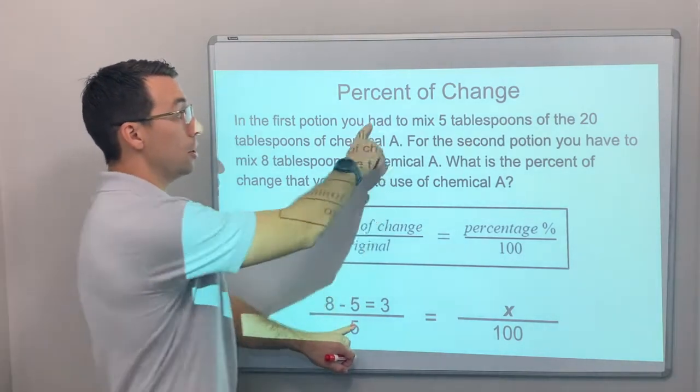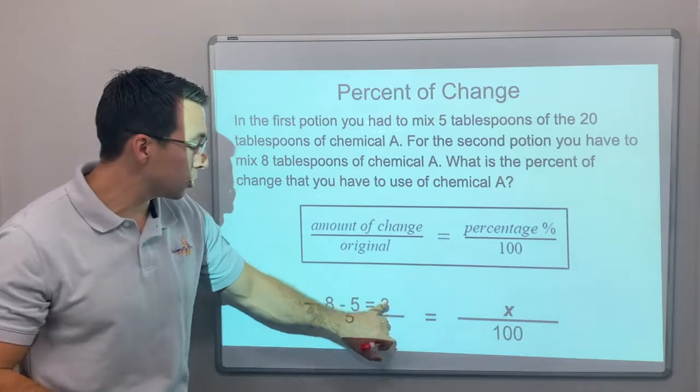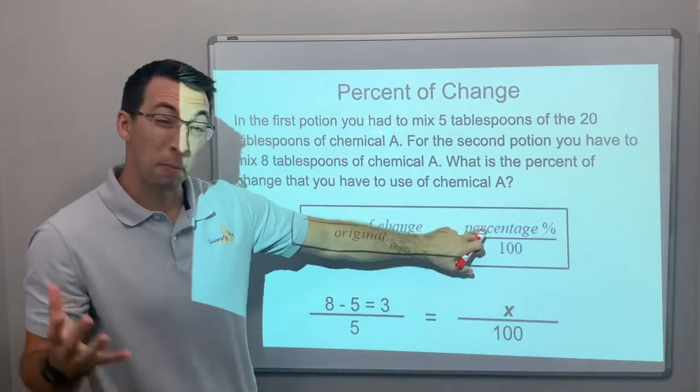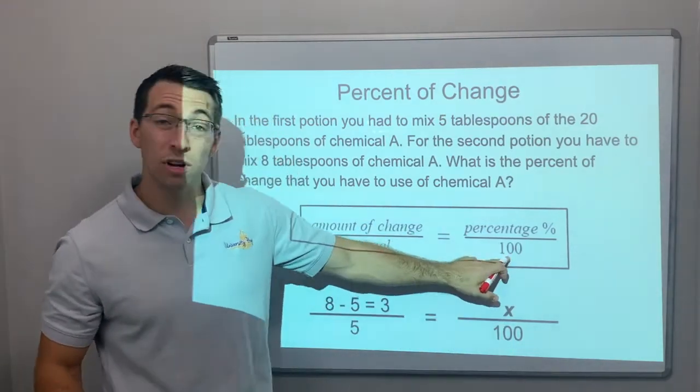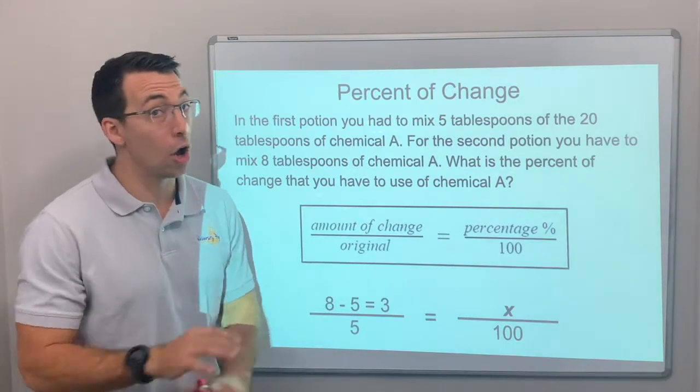8 minus 5 is 3, so the amount of change is 3 over the original. The original, the first potion, you have 5 tablespoons, so the original is 3 over 5 equals here's our variable, the percentage, x over 100. Why is it 100? Because percentages are always out of 100.